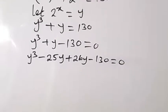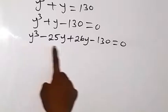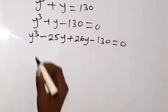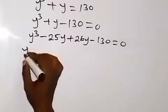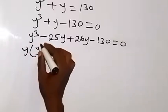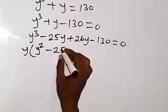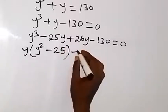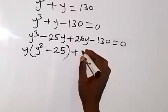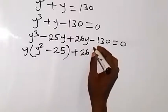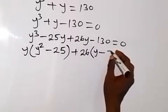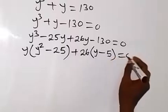When we group it, from here, what is common? When we bring out what is common here, y is common here. We say y into bracket y squared left here, then minus 25 left here. Then plus what is common here is 26. That's 26 out. Then left with y here, then minus 5 left here. Then equal to 0.